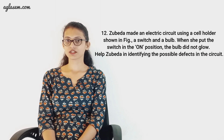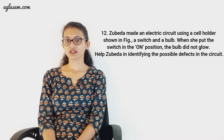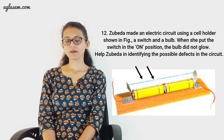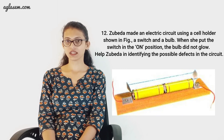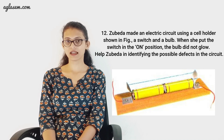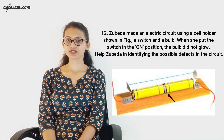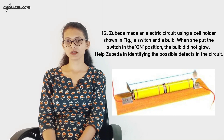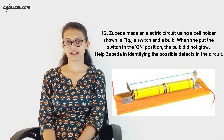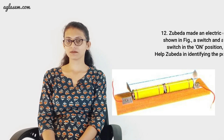Our next question is question number twelve: Zubeda makes an electric circuit using a cell holder, a switch, and a bulb. When she puts the switch in the ON position, the bulb did not glow. Help Zubeda identify the possible defects. In the figure, two cells are connected in a cell holder using a rubber band. The first possible defect is that the rubber band may not be tight enough to keep the two cells in proper contact, causing the circuit to be incomplete and no current to flow. The second reason may be that the negative terminal of one cell may not be connected to the positive terminal of the other. On rectifying these two things, the bulb will likely glow.